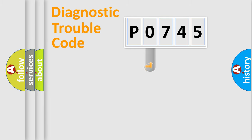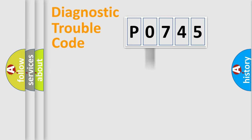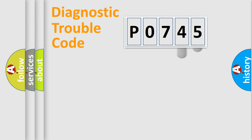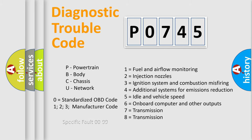This distribution is defined in the first character of the code. If the second character is zero, it is a standardized error. In the case of numbers 1, 2, or 3, it is a manufacturer-specific error. The third character specifies a subset of errors. This distribution is valid only for the standardized DTC code. Only the last two characters define the specific fault of the group, and this is valid only if the second character is zero.